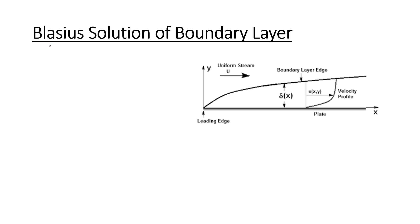In this video, let us see what is the Blasius solution of boundary layer. Here you can see a flat plate over which a boundary layer is formed. The free stream velocity is given as u_infinity, and this is the boundary layer thickness delta(x) at a position x, where x is the distance from the leading edge. The velocity profile shows a parabolic nature.